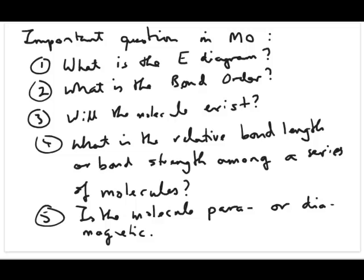And then another question you can answer with the value of the bond order that you calculate is what's the relative bond length or bond strength among a series of molecules that you're given. And then lastly, is the molecule that you have a paramagnetic or diamagnetic molecule? That also can be answered using the electron configuration.